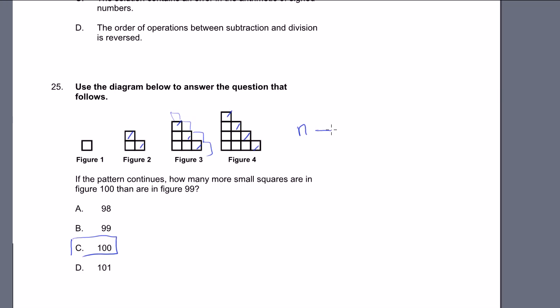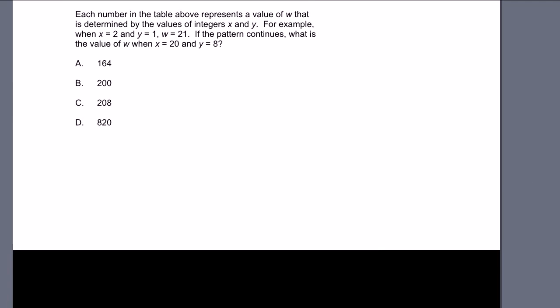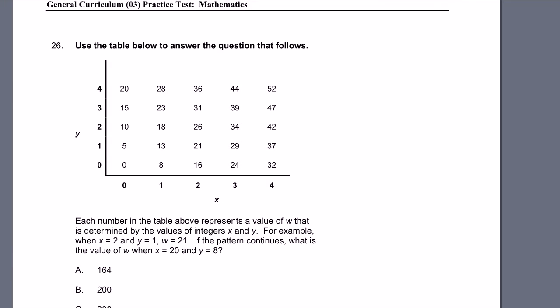When we go from n to n plus 1, we're adding n plus 1 squares. So you go from 99 to 100, you add 100 squares. Or there are 100 more squares in the 100 figure than in the 99 figure. Next problem. Problem 26.